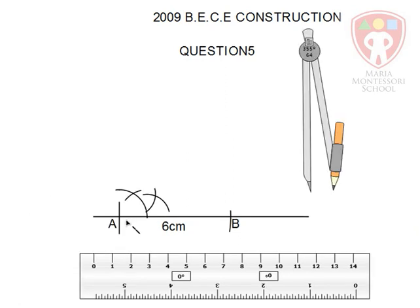We then draw a straight line from A through the second intersections of arcs that we have here, and that gives us an angle of 30 degrees. So we draw the line.